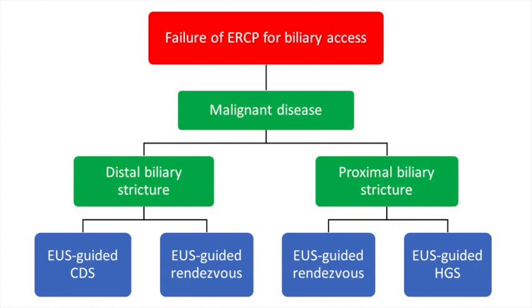When all ERCP techniques have failed, the next steps involve the use of a linear echo endoscope to achieve biliary access. In patients with malignant disease, EUS-guided rendezvous technique or EUS-guided biliary drainage are the next steps. EUS-guided choledochoduodenostomy using either a lumen-apposing metal stent or a fully covered self-expandable metal stent is the technique of choice in patients with distal malignant biliary strictures. EUS-guided hepaticogastrostomy is the drainage technique of choice in patients with proximal malignant biliary strictures. Each technique will now be explained in greater detail.